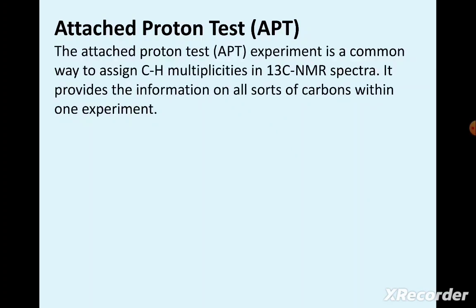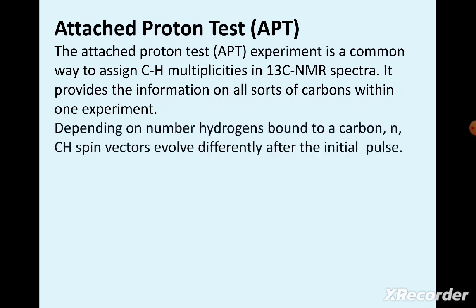APT — Attached Proton Test — is a common way to assign carbon-hydrogen multiplicities in the 13C NMR spectrum. It provides information on all sorts of carbons within one experiment, depending on the number of hydrogens bound to a carbon.